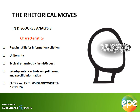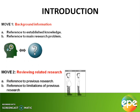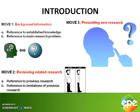The introduction of any scholarly written article gives you an idea of the established knowledge. Moves one to three can easily be identified under the introduction: the background information, the reviewing of related research, and presenting new research. The background information helps you to understand the established knowledge as well as the main research problems.